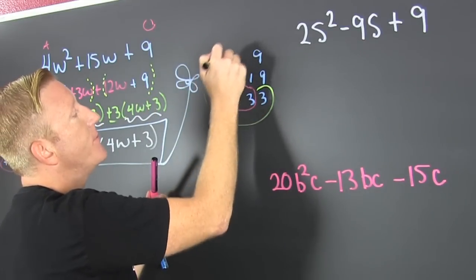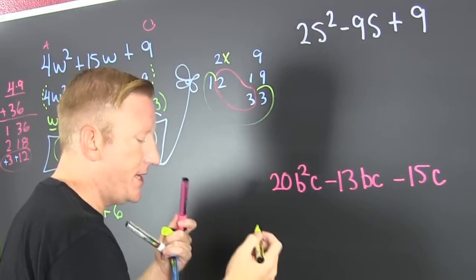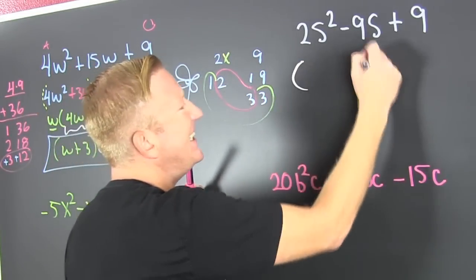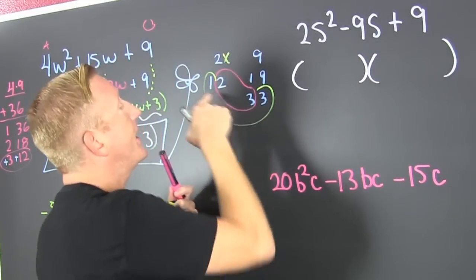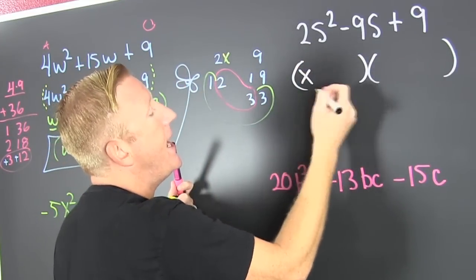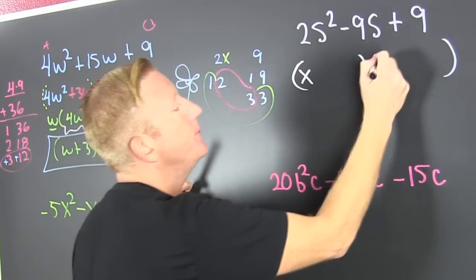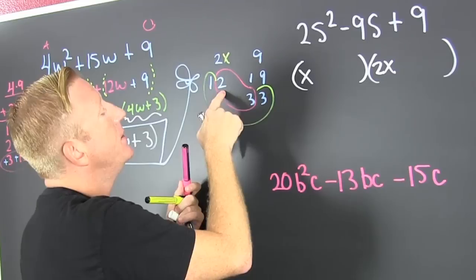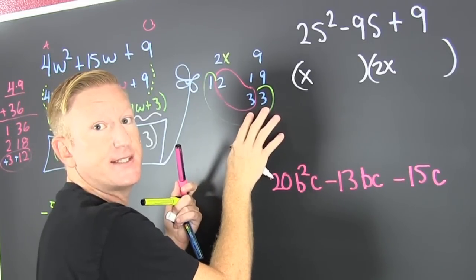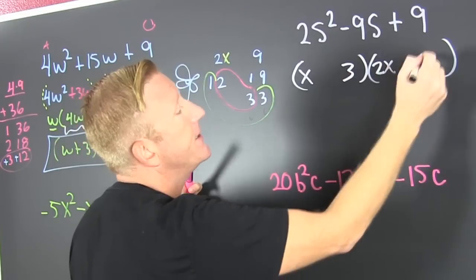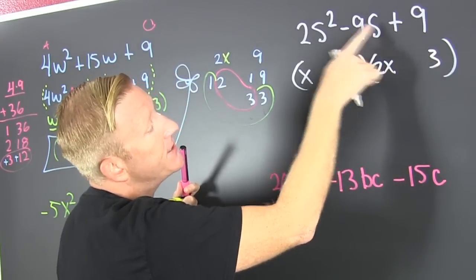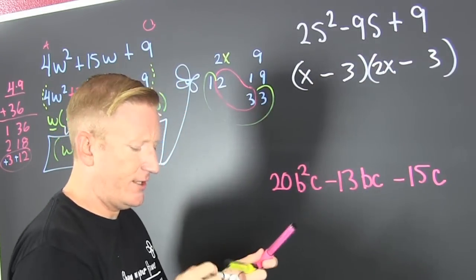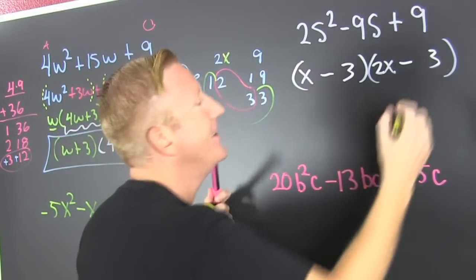The X's come from here and the constants come from there. I have that 1 and that 2 from the X's, and from my constants I have that 3 and that 3. The signs are the same and they're both negative. And then that's it.